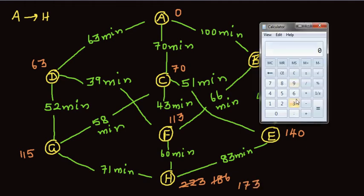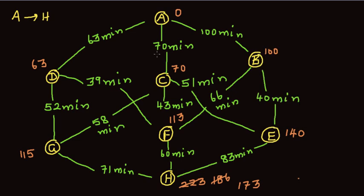Let me confirm: 70 plus 43 is 113, and 113 plus 60 is 173. So that is better. You can also reach C from G, but that would be 115 plus 58, which is going to be greater than 70, so that's not a good approach. Similarly, going from E to C, at E you've reached 140, and 140 plus 66 is obviously going to be greater than 70, so that is also not a good approach.